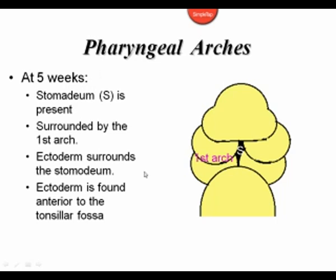At week 5, what we see is a first arch — with actually two components — that surrounds the opening into the foregut, called the stomadium, which will develop in the future into the oral cavity. It is ectoderm that surrounds and lines the stomadium. The stomadium will be all that tissue in front of the tonsillar fossa. The tonsillar fossa will be the gateway into the foregut, which is surrounded by the pharyngeal arches.